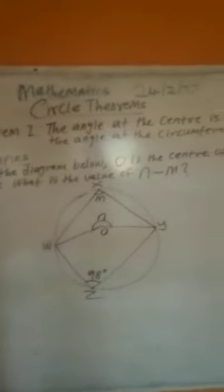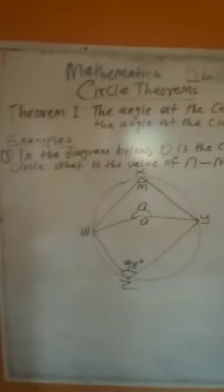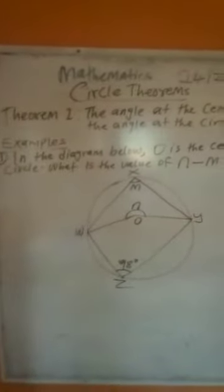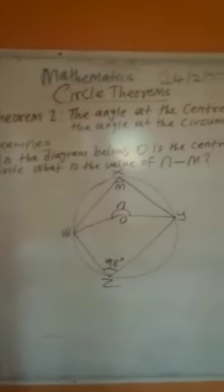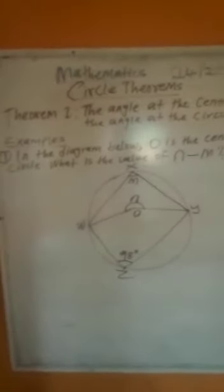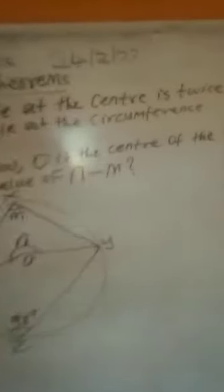My intelligence students, our topic is circle theories. Theory 1 — what I call theory 1 — the first theory we are going to treat is: the angle at the center is twice the angle at the circumference.